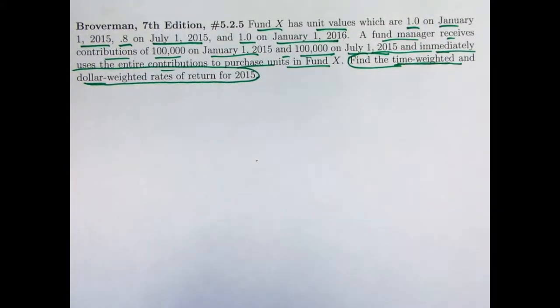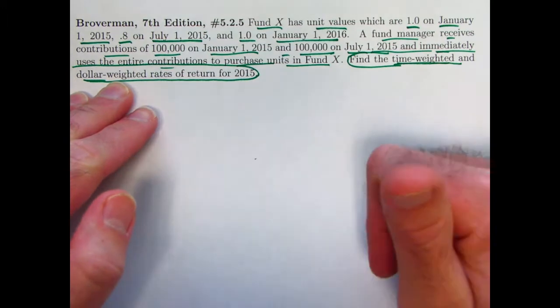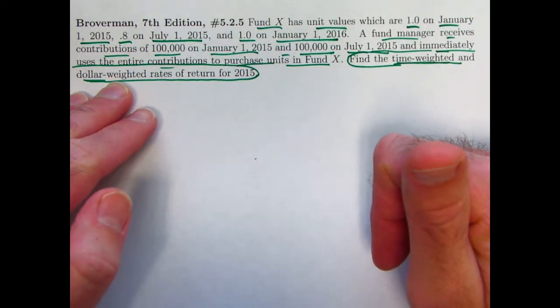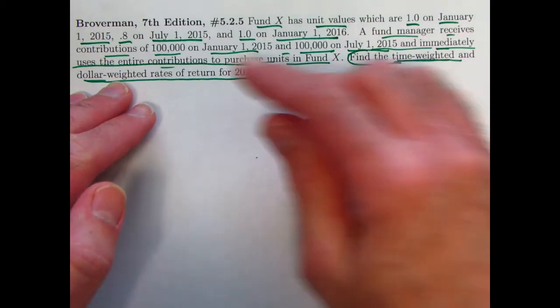That should be 0%. We will again confirm it by thinking about those growth factors, but just realize intuitively that should be 0%. What about the dollar-weighted rate of return? Also known as money-weighted. Will that be negative, zero, or positive? Is it clear?